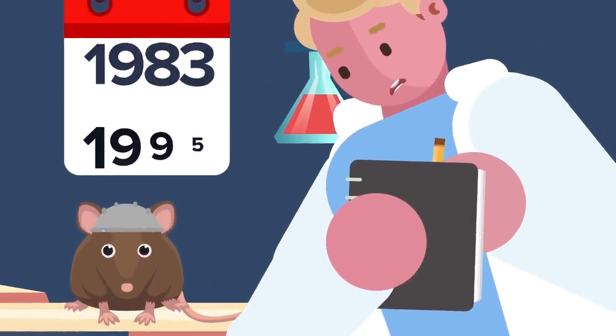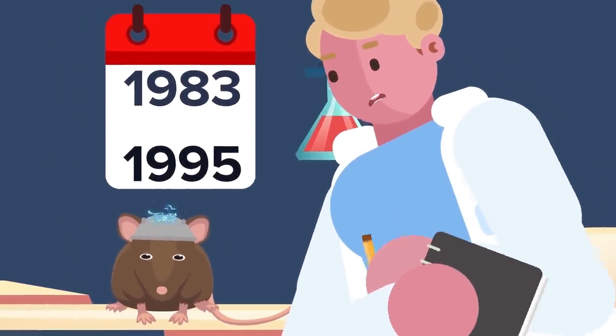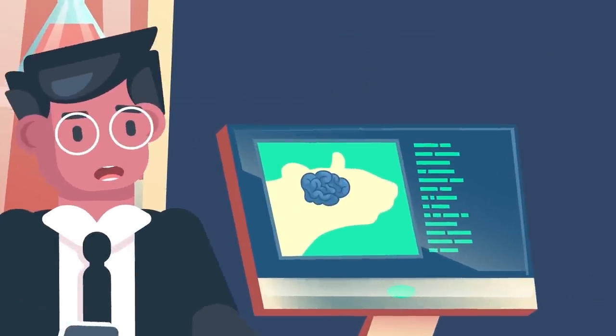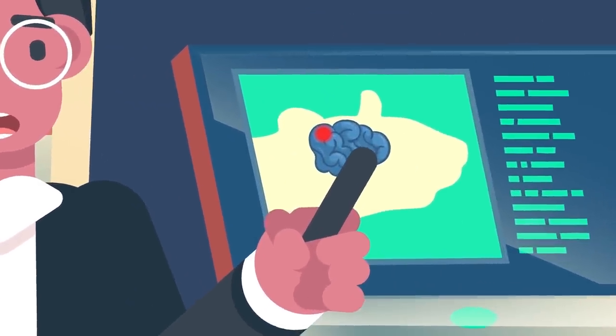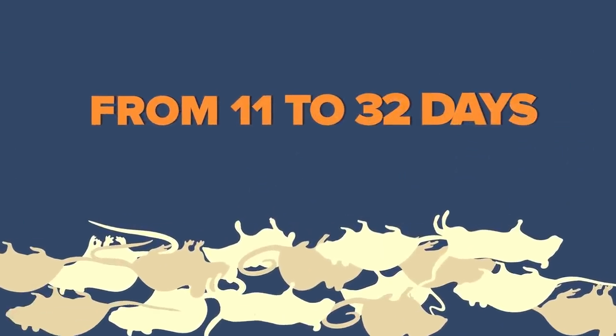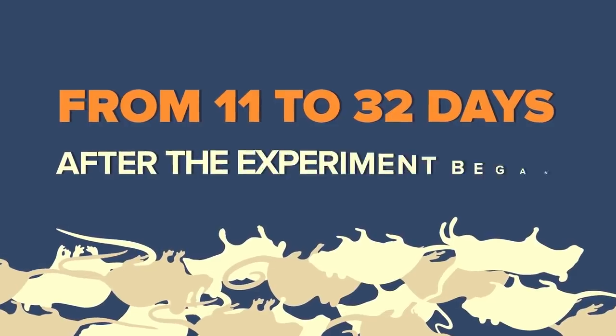And a pair of experiments in 1983 and 1995 that kept rats from falling asleep through constant stimulation showed that their brains could only micro-sleep in one tiny part. The sleep-addled rodents all invariably died anywhere from 11 to 32 days after the experiment began.